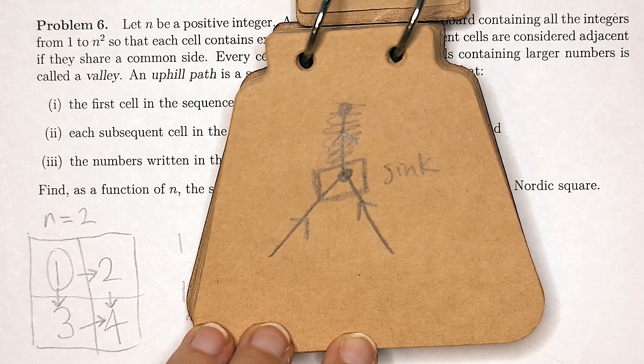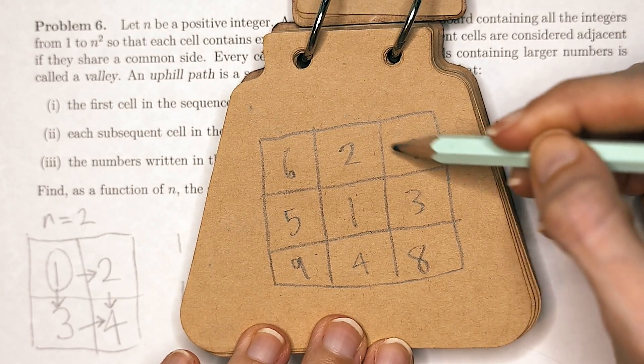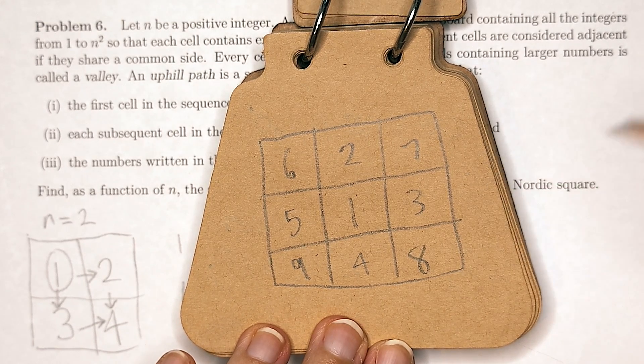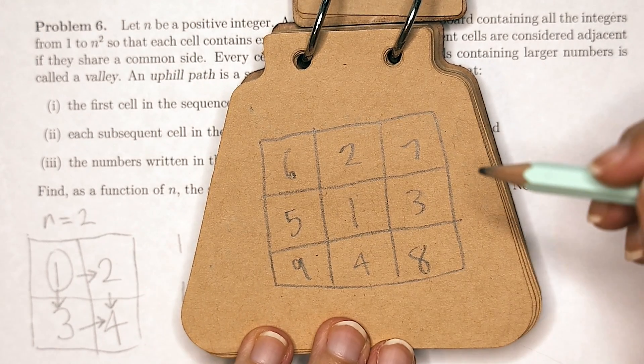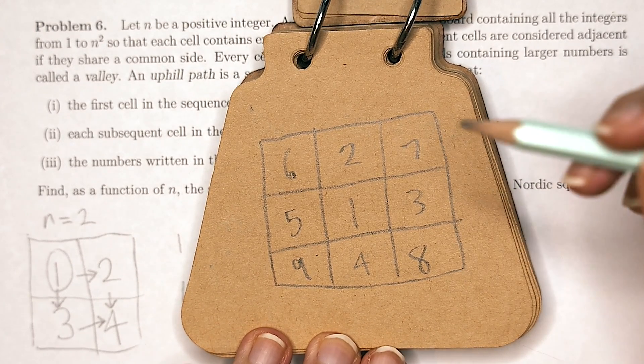With this, we've given ourselves the golden ticket. If every two adjacent numbers only have one path back to the valley, then the minimum number of paths in our Nordic square would be equal to the number of adjacent numbers.